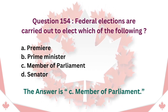Question 154: Federal elections are carried out to elect which of the following? A. Premier. B. Prime Minister. C. Member of Parliament. D. Senator. The answer is C. Member of Parliament.